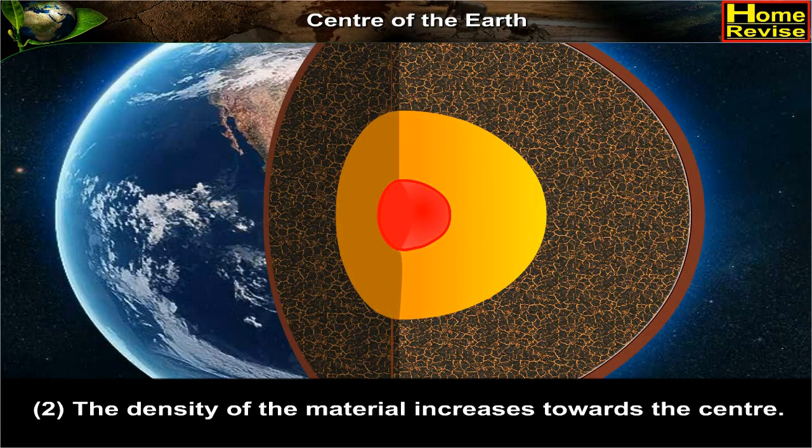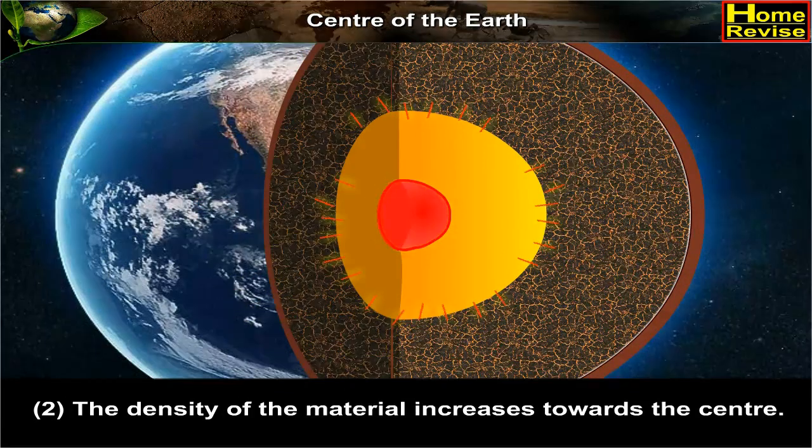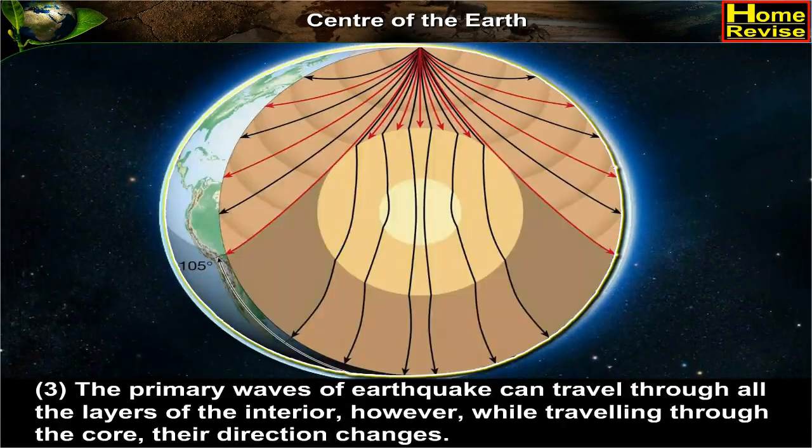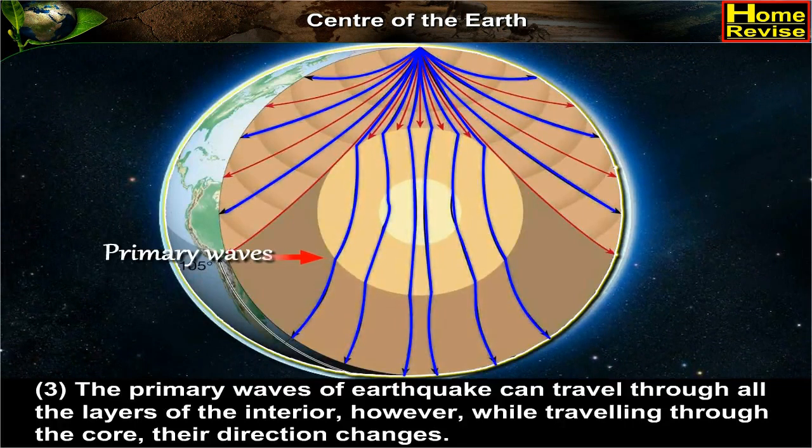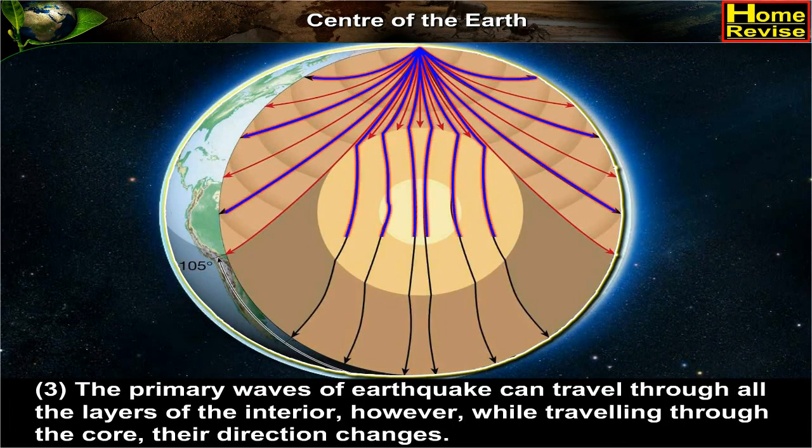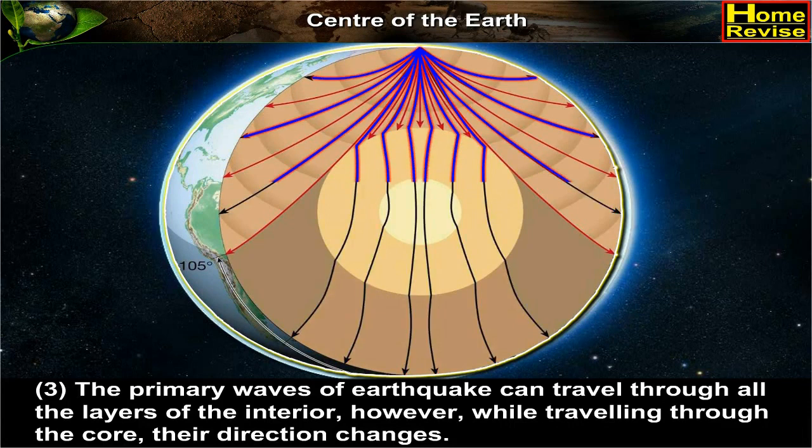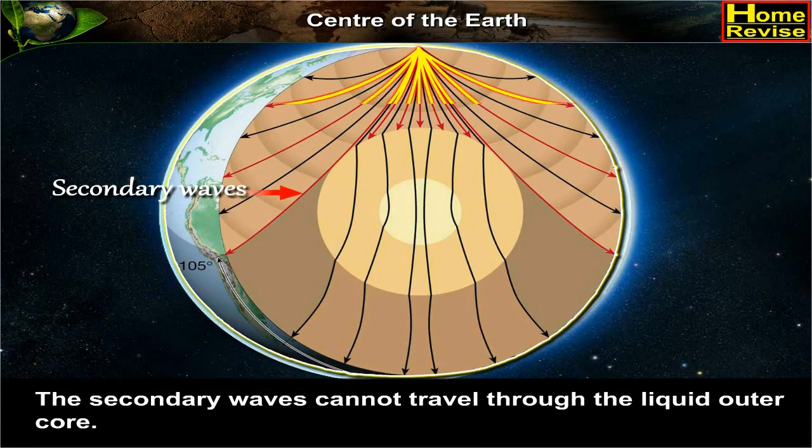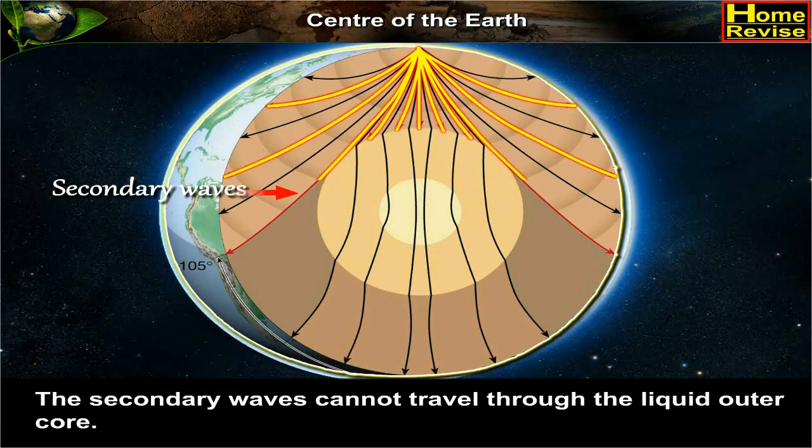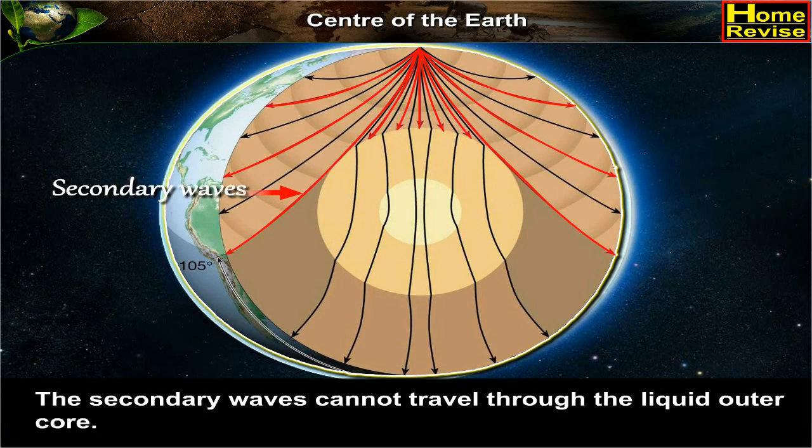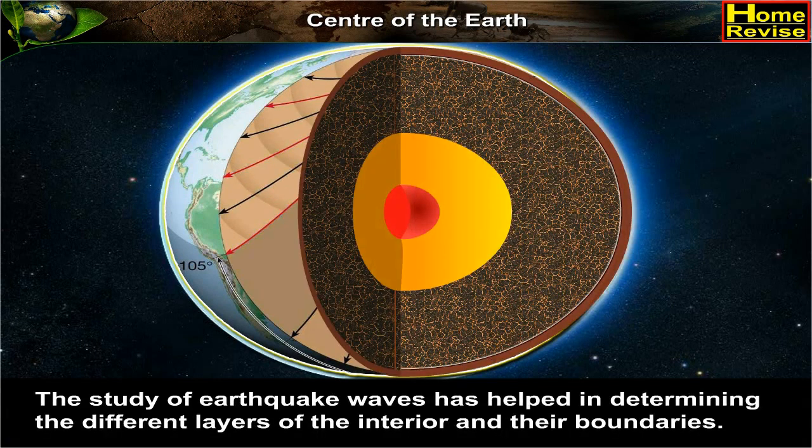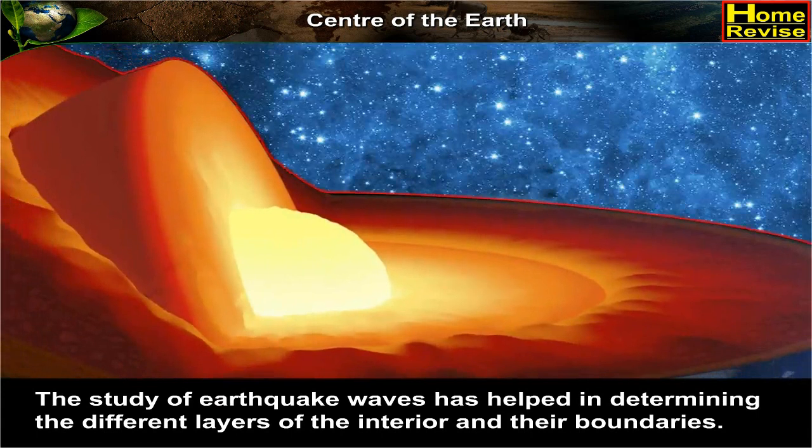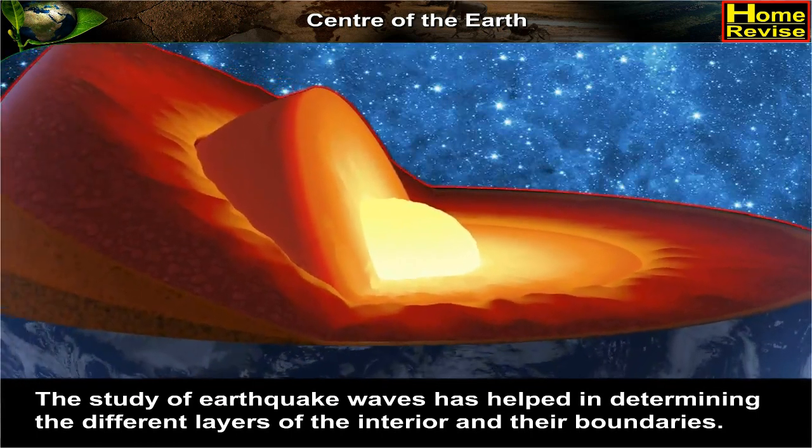2. The density of the material increases towards the center. 3. The primary waves of earthquake can travel through all the layers of the interior. However, while traveling through the core, the direction changes. The secondary waves cannot travel through the liquid outer core. The study of earthquake waves has helped in determining the different layers of the interior and their boundaries.